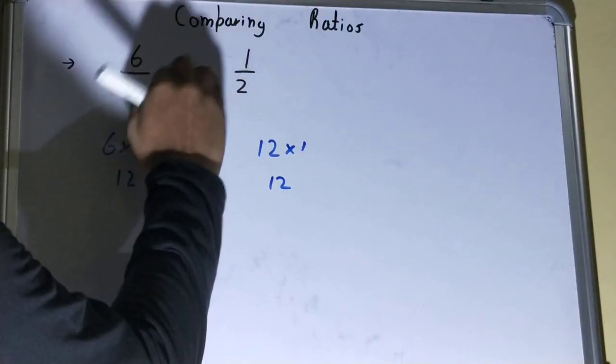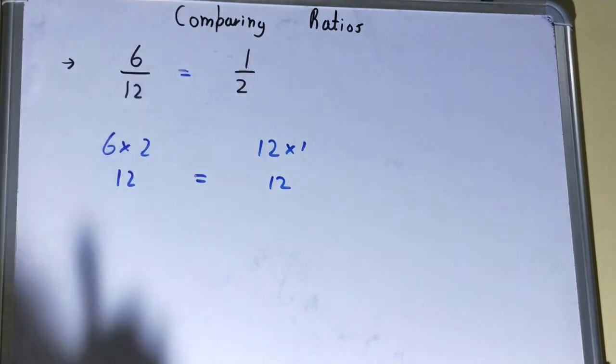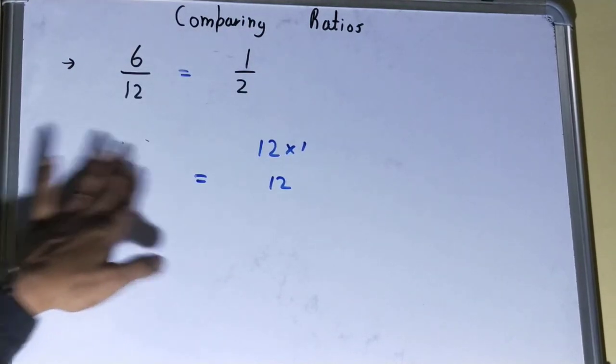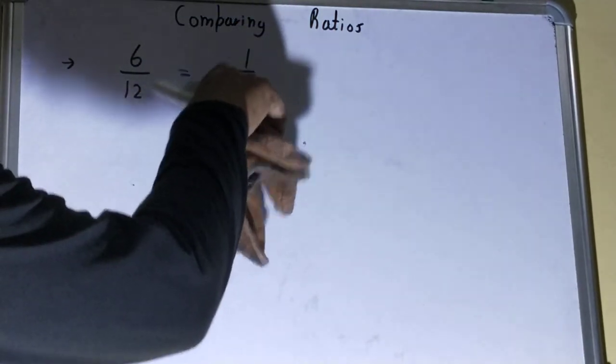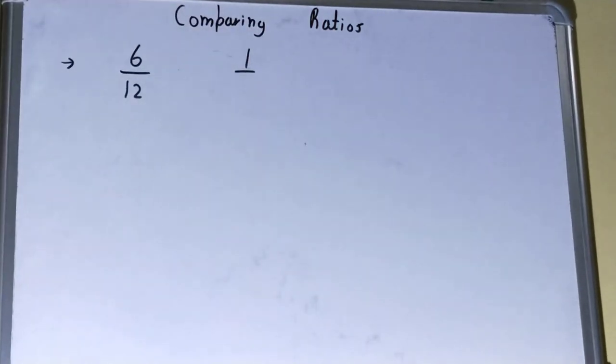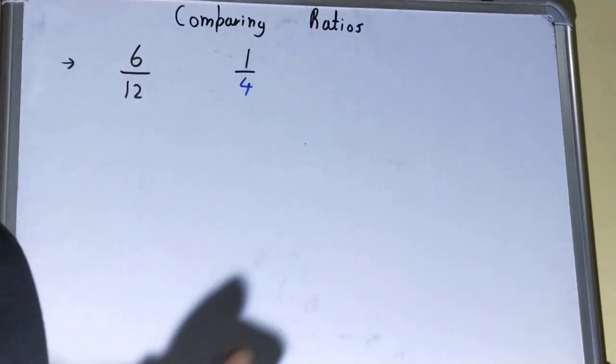So we can say these two given sets of ratio are equal to each other. Okay, now if we change something, if we change the ratio a bit, and then let's compare. Let's make it as 4.